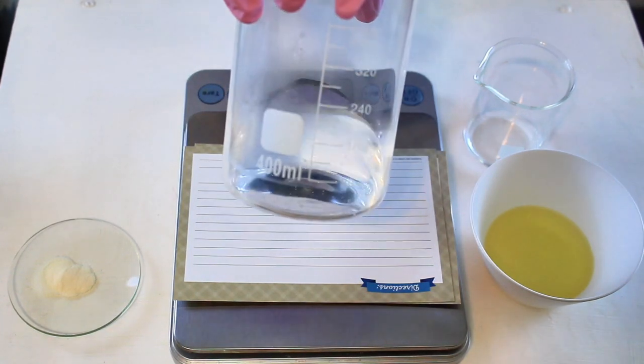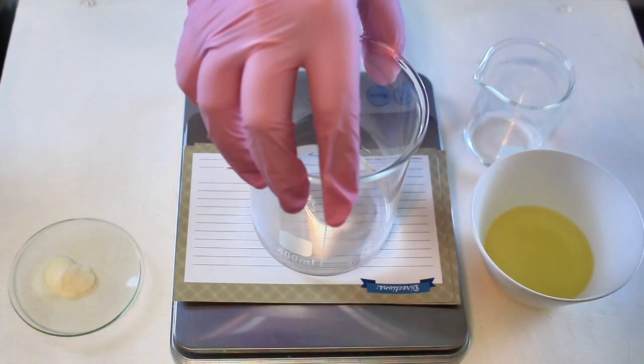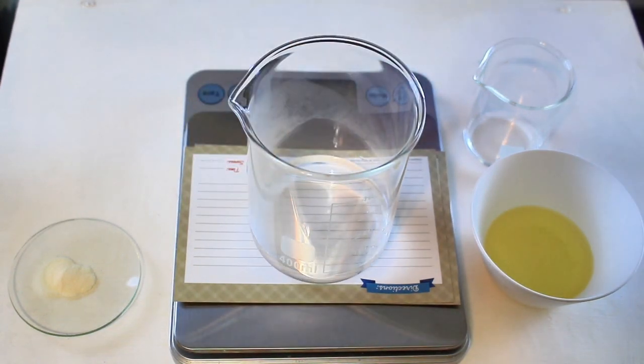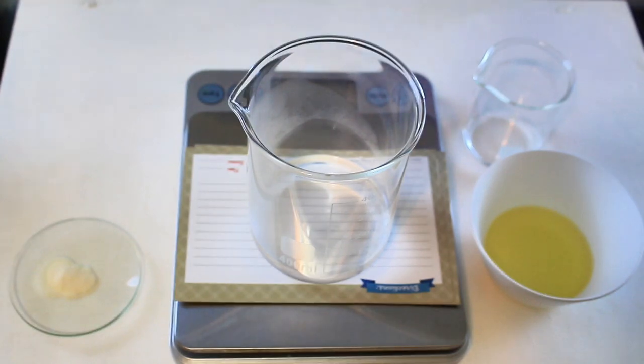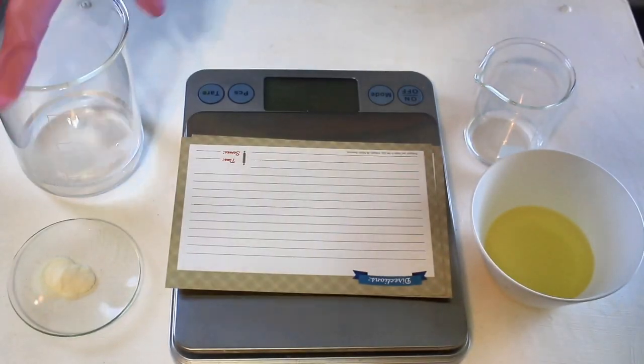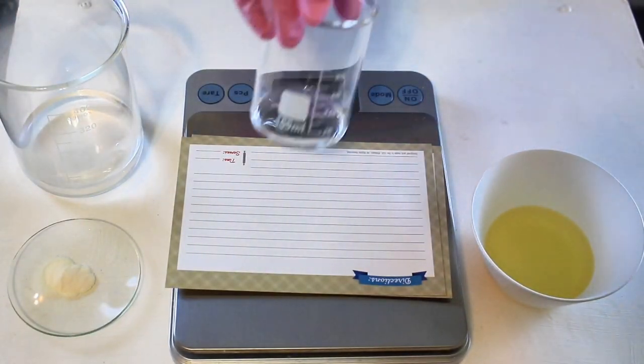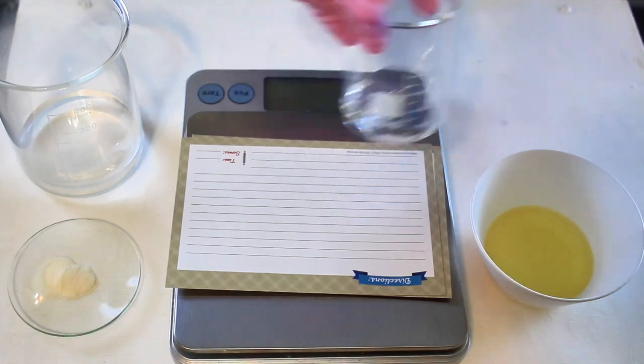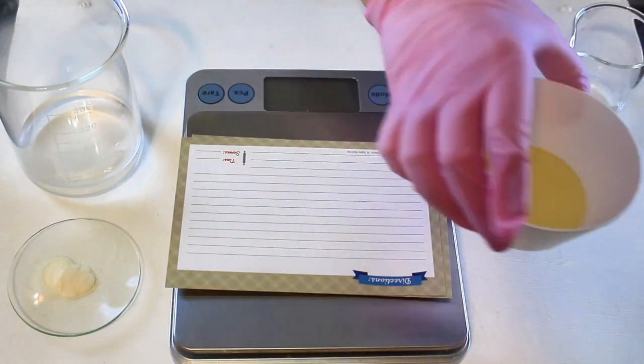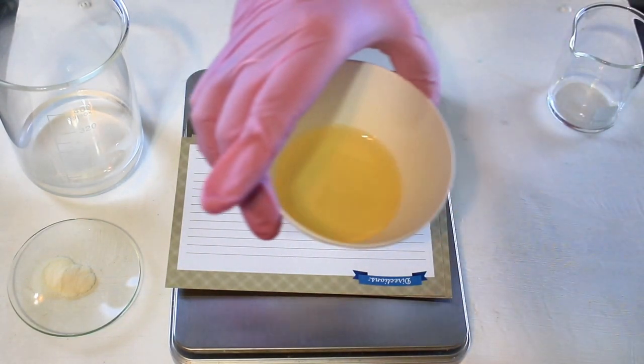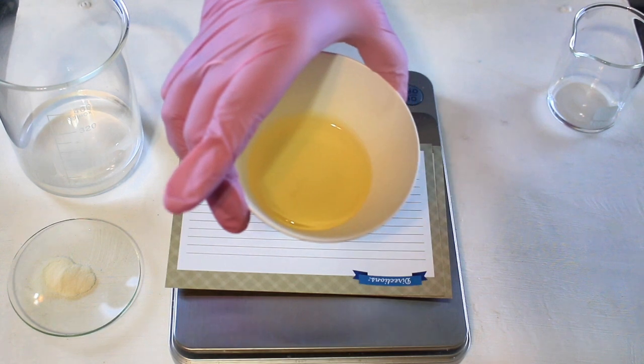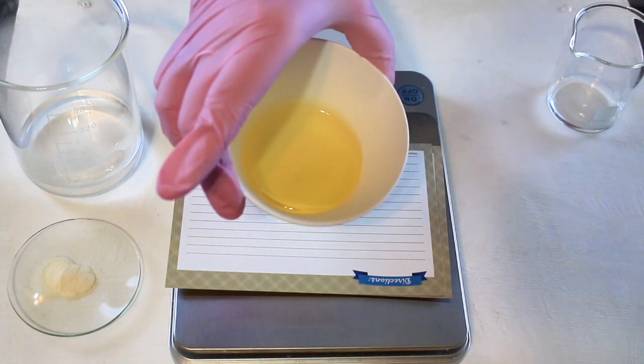I'm using heated distilled water, heated to 122 degrees Fahrenheit. I'm using propanediol as a humectant—it's not as sticky as glycerin. The surfactant I'll be using today is Plantapon SF.